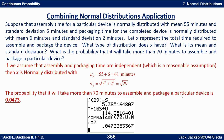For the probability of taking more than 70 minutes: I stored 61 as m and the square root of 29 as s. For the upper bound, I used the mean plus 10 times s — beyond which there's negligible probability. Then I computed normalcdf from 70 to that upper limit with the given mean and standard deviation. The result is 0.0473, a little less than five percent.